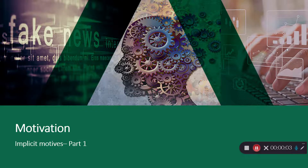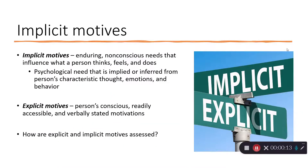Welcome back to another week in motivation. This week we're going to be talking about implicit motives. Implicit motives are these enduring, non-conscious needs that influence how a person thinks, feels, and behaves. Explicit motives, on the other hand, are conscious, readily available, and verbally stated motivations. McClelland is a researcher who really pioneered research on implicit motives, and this whole research area started because he noticed a discrepancy between what people would say and what they would actually do.